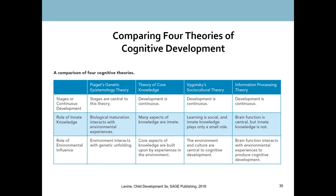That concludes the information processing section. The final slide on page 266 compares Piaget, theory of core knowledge, Vygotsky, and information processing theory across several dimensions. It's worth reading to understand the comparisons being made. To highlight a couple of key differences between Piaget and Vygotsky: both believe that children actively construct knowledge, but for Piaget, children construct knowledge by interacting with the environment, while for Vygotsky, children construct knowledge through interacting with others — with society and other people.